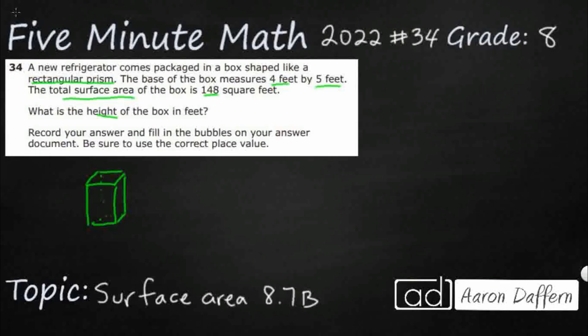All right, so we're looking for the total surface area. So we're not looking for the volume, but the total surface area. It's going to equal the perimeter times the height plus double the base.